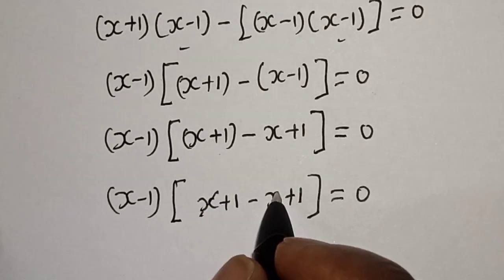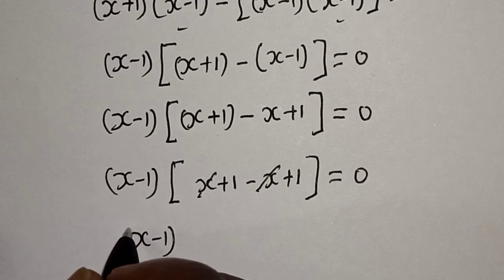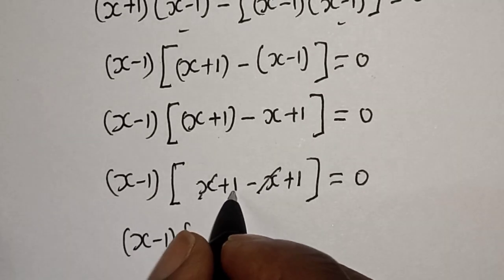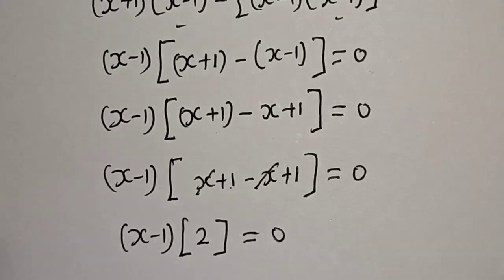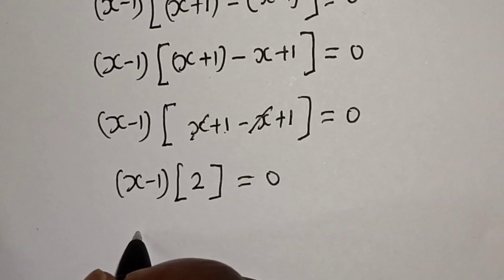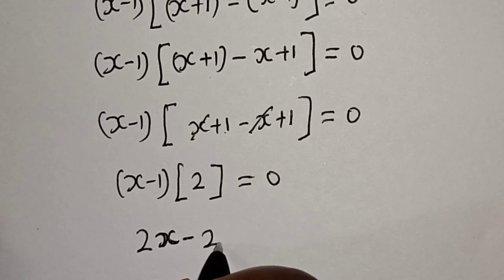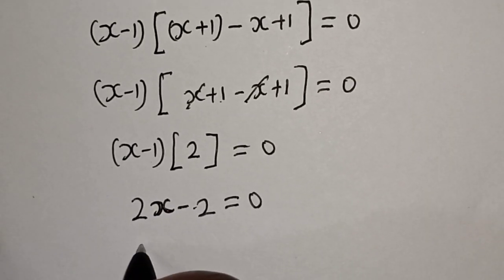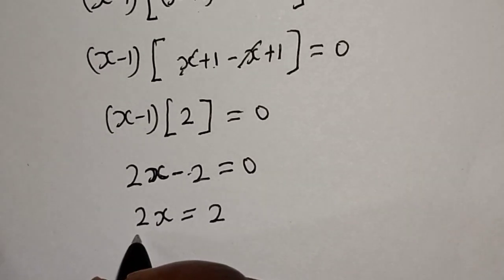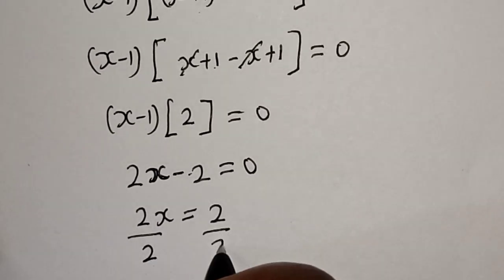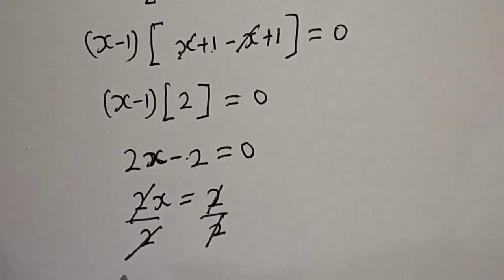This one will cancel this. We have (s minus 1) bracket (1 plus 1), that is 2, equal to 0. If you multiply out, we have 2s minus 2 equals 0. Let's bring this to this side: 2s equals 2. Divide both sides by 2, and s is equal to 1. That is our final answer.